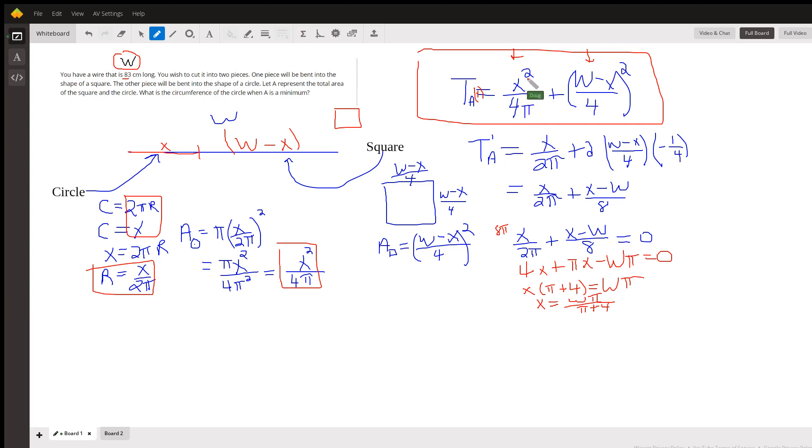For the derivative of this term, I'll use the power rule. 2 over 4π reduces to 1 over 2π. For the second term, I'll use the power rule followed by the chain rule. By the way, the derivative of the inside is negative 1 fourth. You got to consider this 4 here.